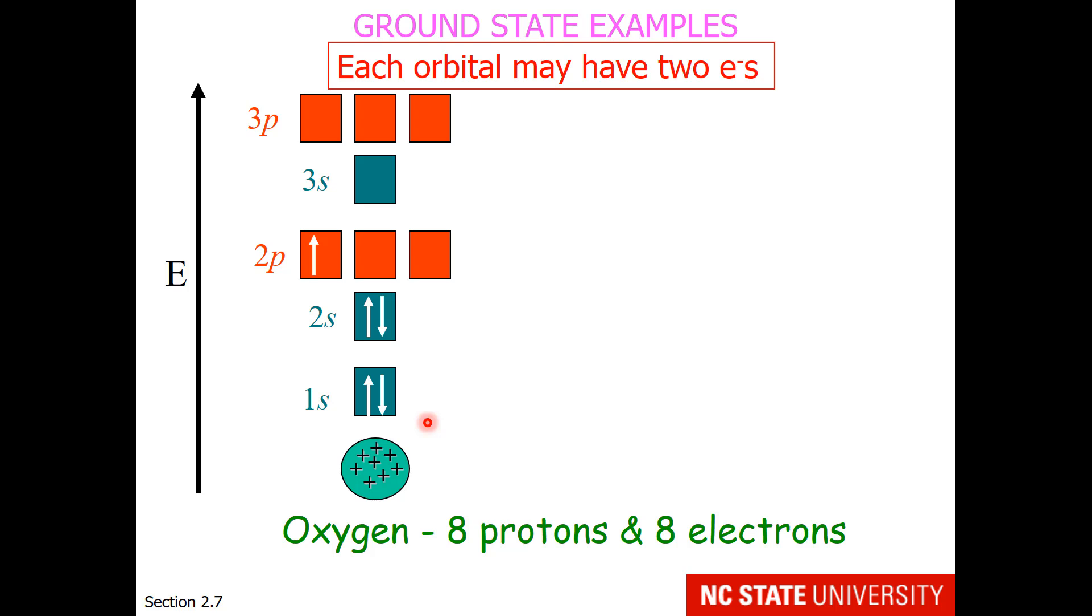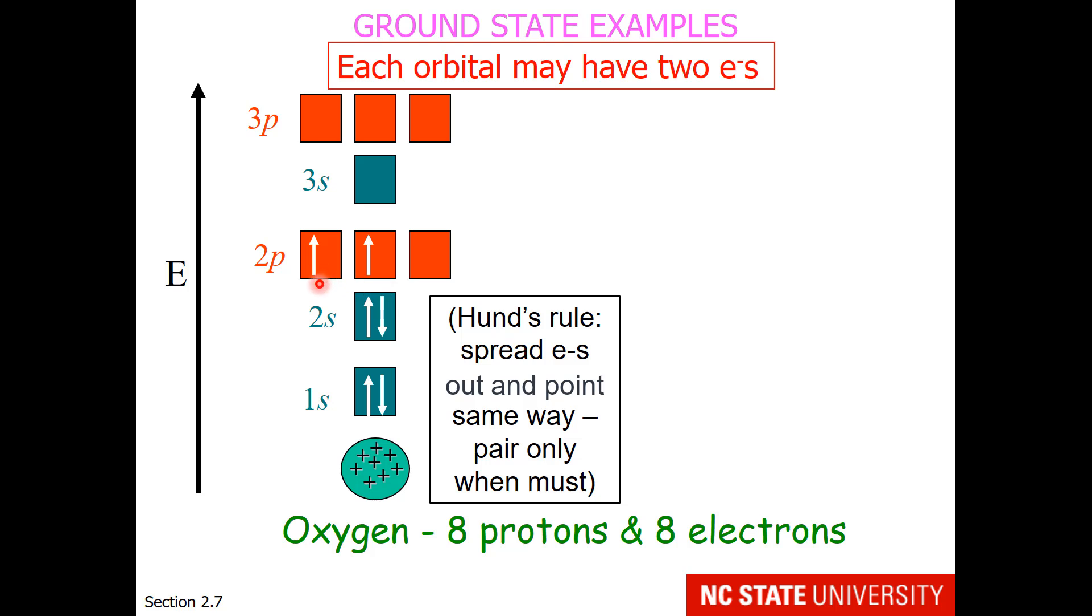Now for electron number five, I will put one electron in one of the 2p orbitals. Here's the time to remember Hund's rule. We have orbitals in a sublevel that are at the same energy, multiple orbitals. So remember, we need to spread out the electrons and point them the same way. We can pair them only when we have to. So here's electron five, six, and seven. Do you see how they are spread out among the suborbital and pointed the same direction?